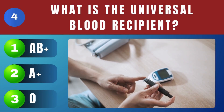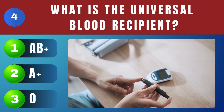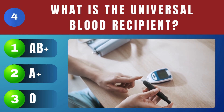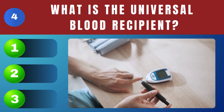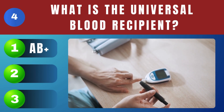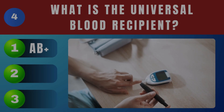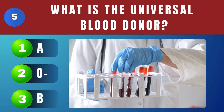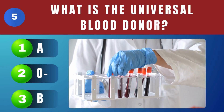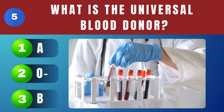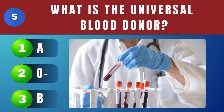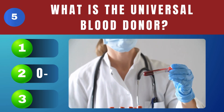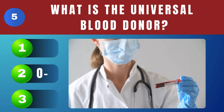What is the universal blood recipient? AB positive. What is the universal blood donor? O negative.